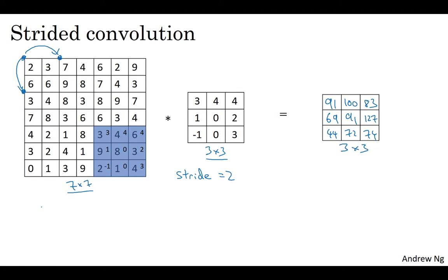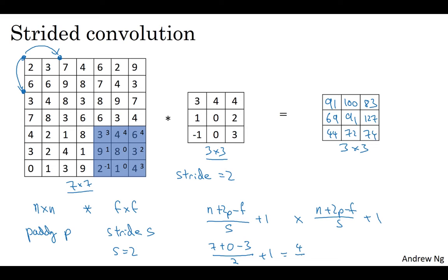So the input and output dimensions are governed by the following formula. If you have an n by n image, convolve with an f by f filter, and if you use padding p and stride s, so in this example s is equal to 2, then you end up with an output that is n plus 2p minus f. And now because you're stepping s steps at a time instead of just one step at a time, you now divide by s plus 1, and then you're going to buy the same thing. So in our example, we have 7 plus 0 minus 3 divided by 2, that's the stride, plus 1 equals 4 over 2 plus 1 equals 3, which is why we wound up with this 3 by 3 output.